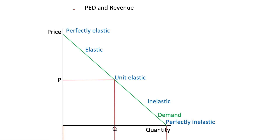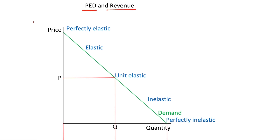Hi, in this video we'll be looking at the relationship between a good or service's price elasticity of demand and the total revenue that a business will be able to generate for that good or service. This is linked to the previous video where we showed that on a straight line demand curve, the elasticity will change across the demand curve — check out that video for more intuition, but I'll recap to some extent here.